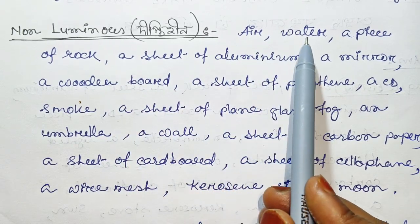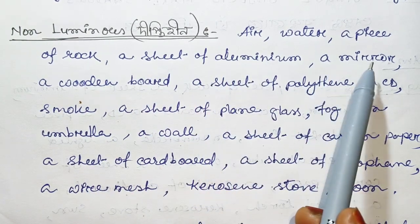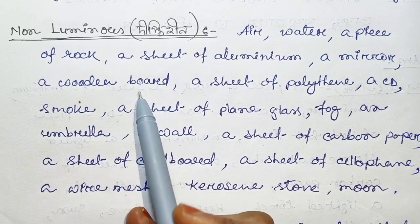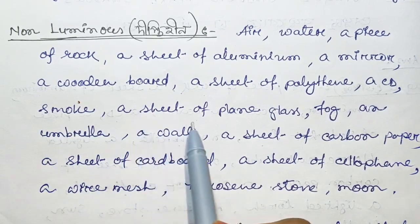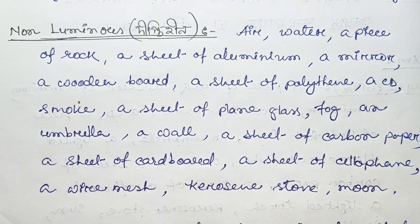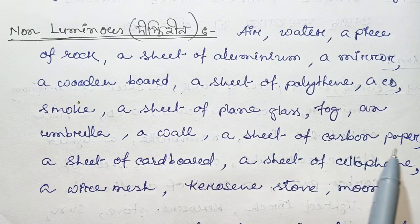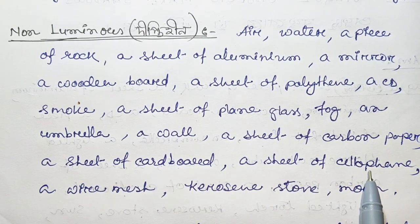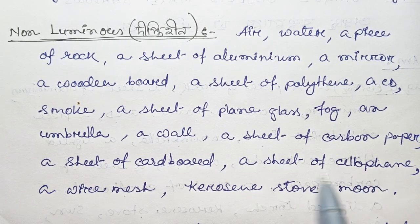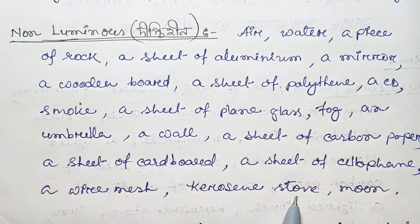Classification answers: air and water are transparent. A piece of rock, a sheet of aluminum, a mirror, a wooden board, a sheet of polythene, a sheet of plain glass, fog, a wall, a sheet of carbon paper, a sheet of cardboard, a sheet of cellophane, and a wire mesh are classified accordingly.